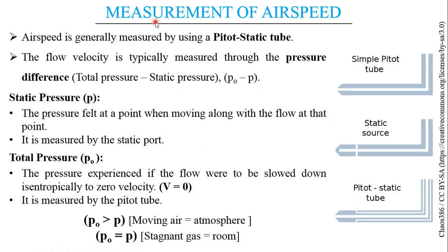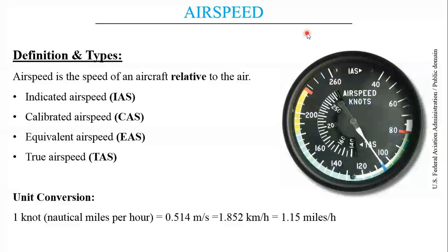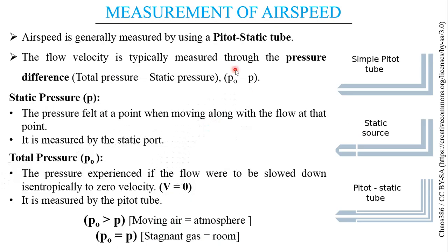Now we will know about the measurement of airspeed. Airspeed is the speed of the aircraft relative to air — so how do we measure it? Airspeed is generally measured using a pitot-static tube. The flow velocity is typically measured through the pressure difference — that is, the difference between total pressure and static pressure — from which we can obtain the flow velocity.